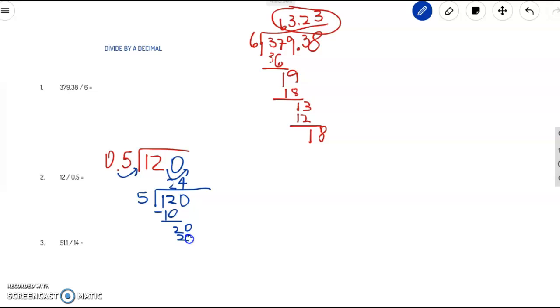12 minus 10 is 2. And then we bring down the 0. 5 goes into 20. How many times? 4 times. So our answer, the answer is 24.